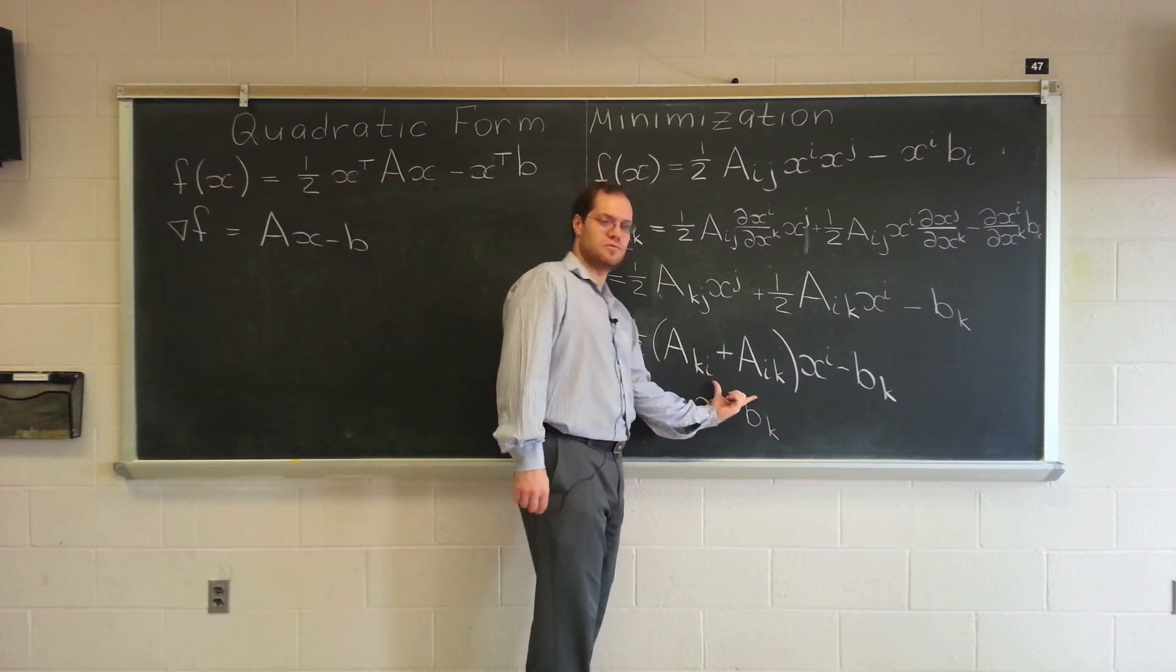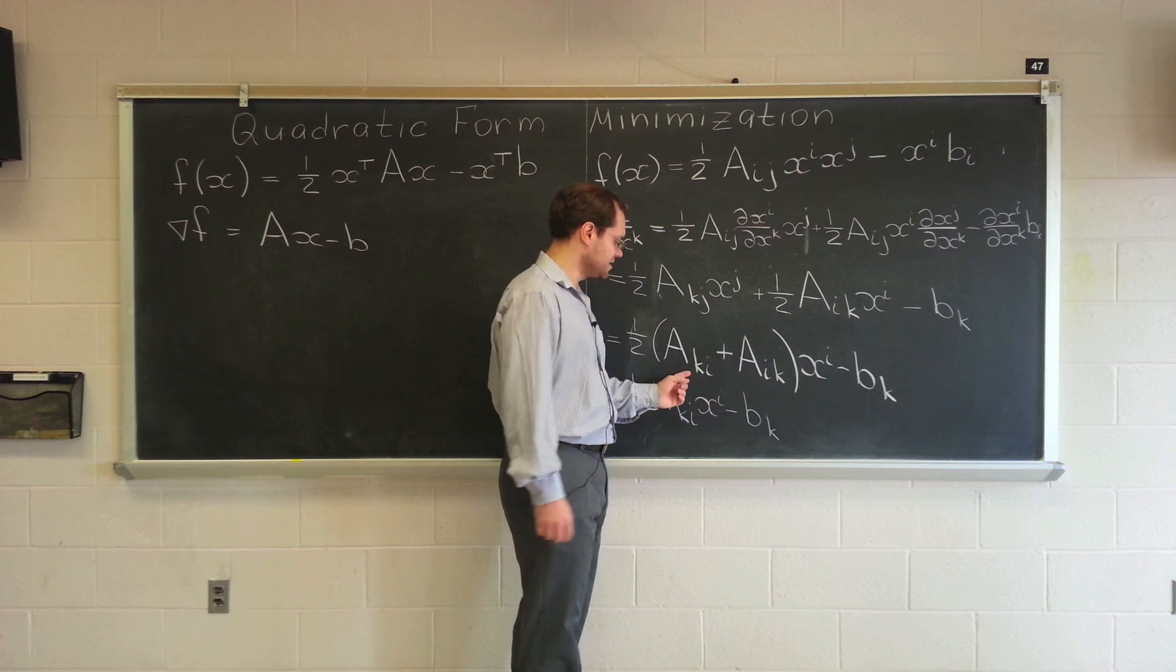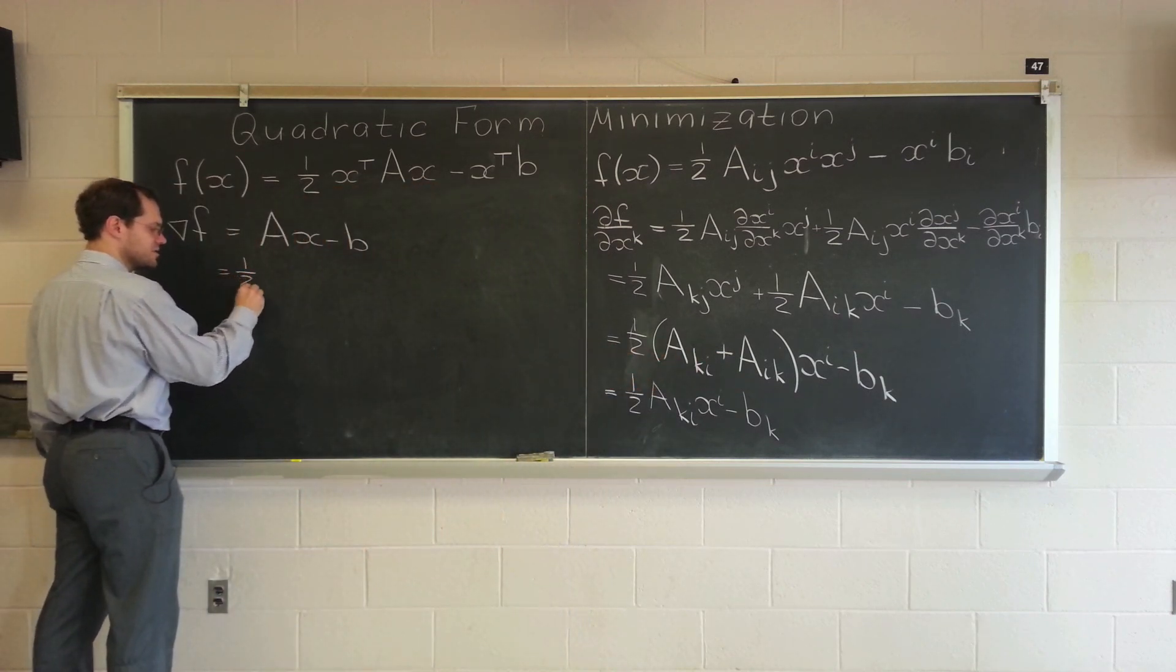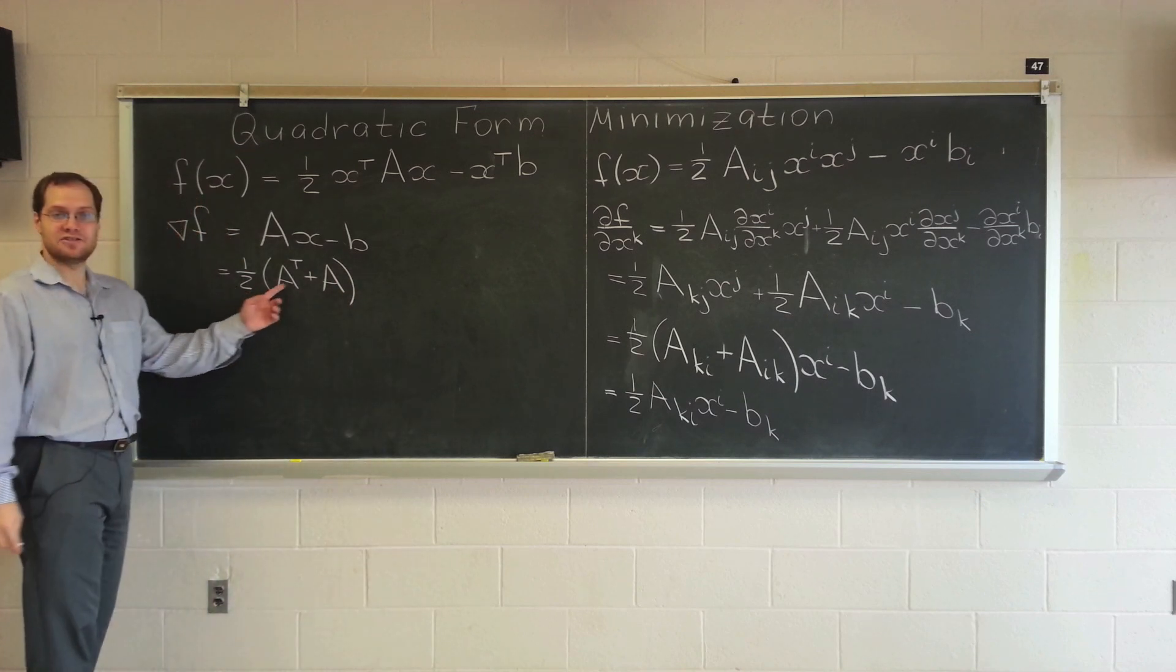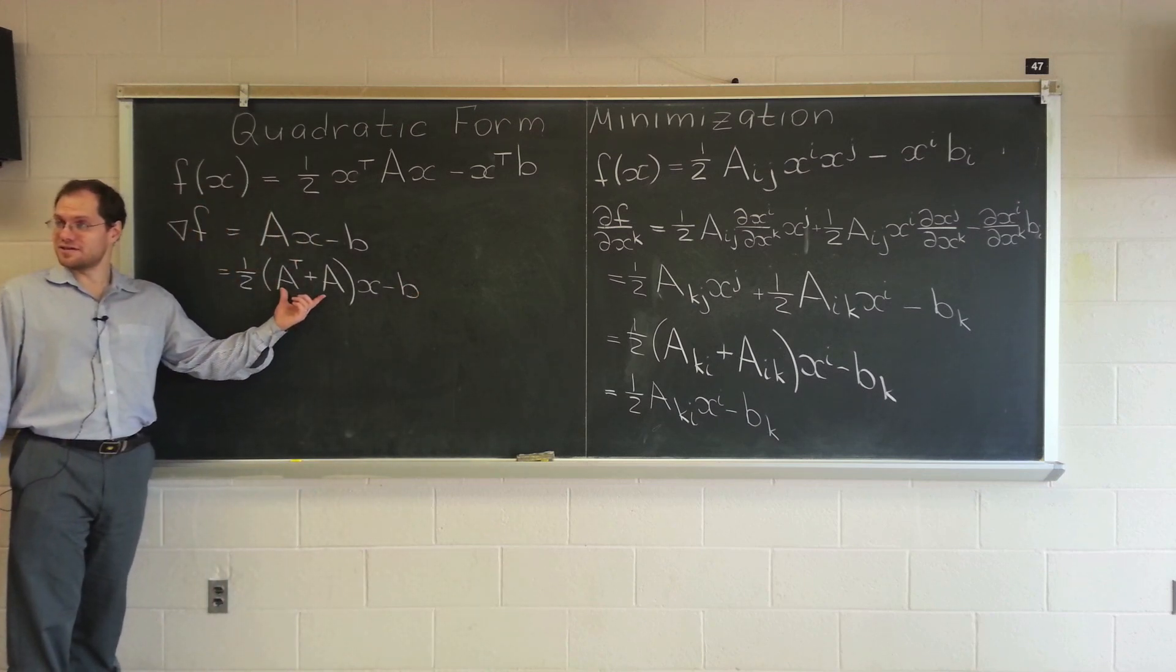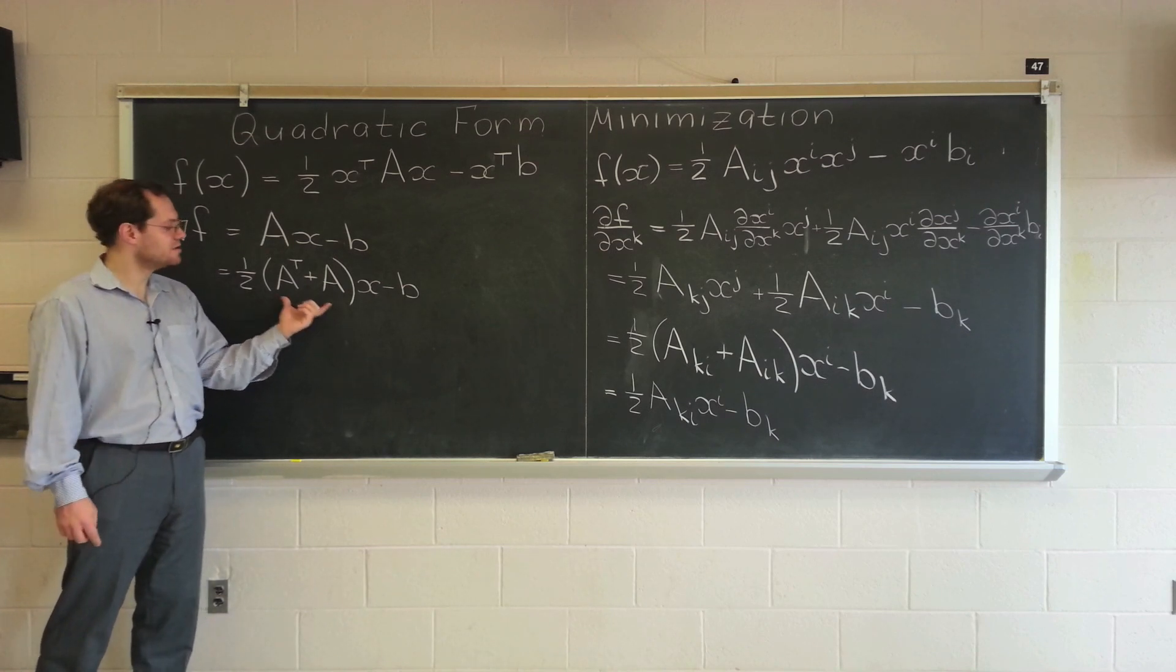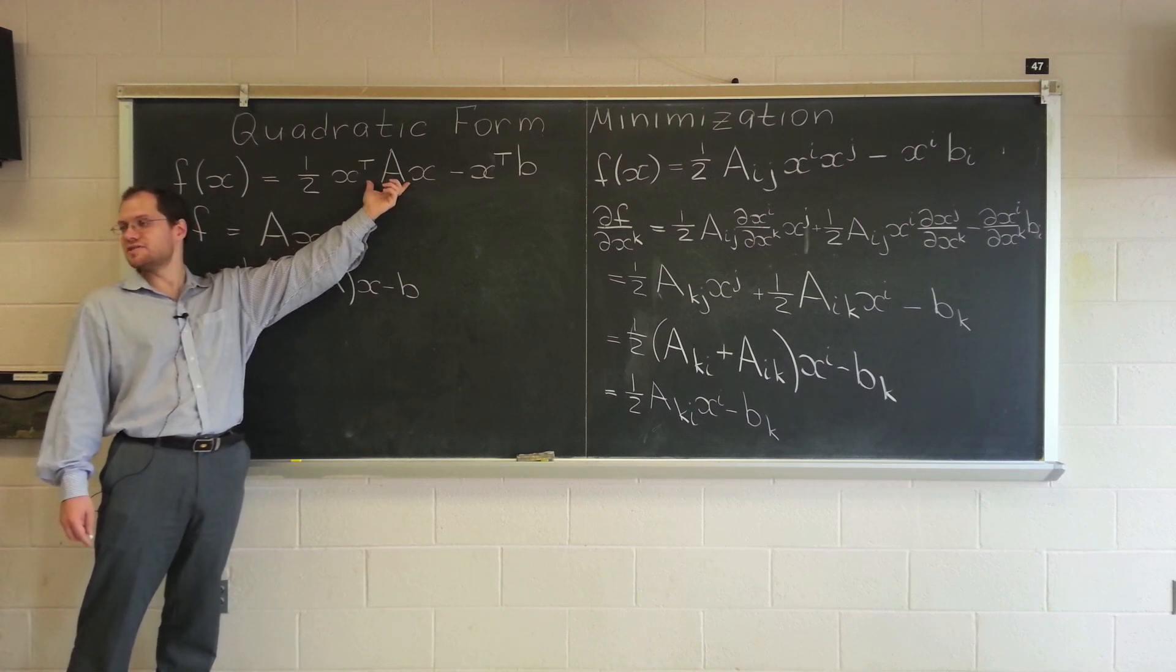But if A is not symmetric, what would you call this in matrix terms? If this is A, then what is this? A transpose. So, the general answer is actually, if A is not symmetric, then the general answer is one half (A transpose + A), one half A transpose plus A. It's called the symmetric part of A. Wouldn't that make it symmetric? If you're adding the transpose to A? That's right. So, even if the matrix is not symmetric here, the gradient ends up having a symmetric matrix in it.